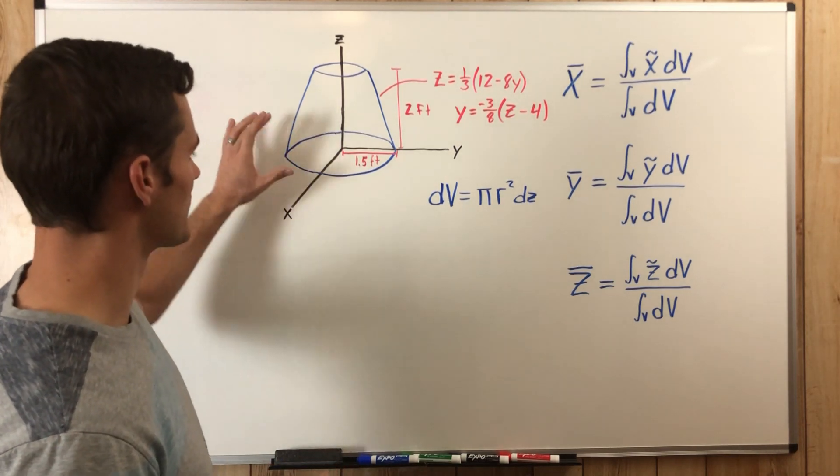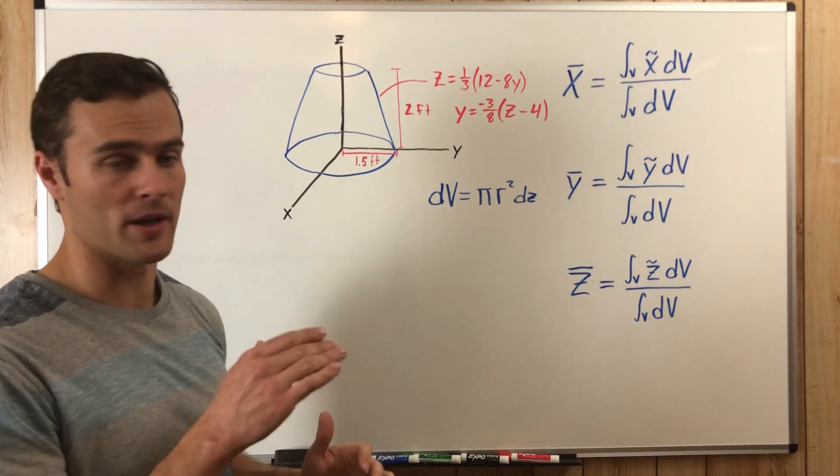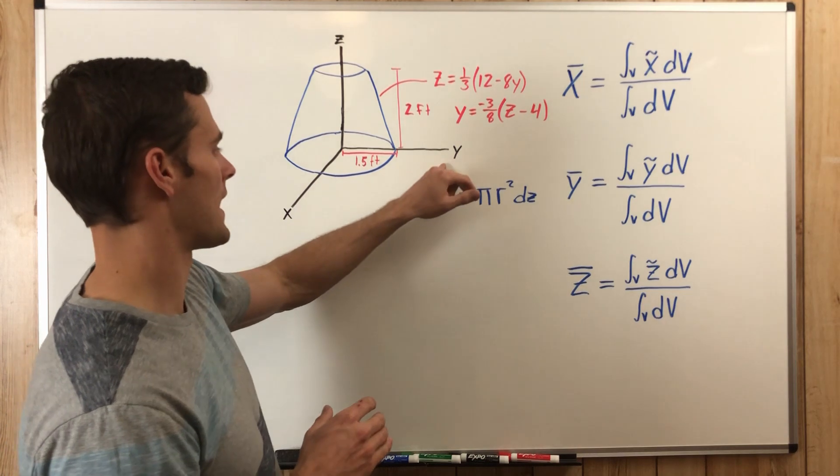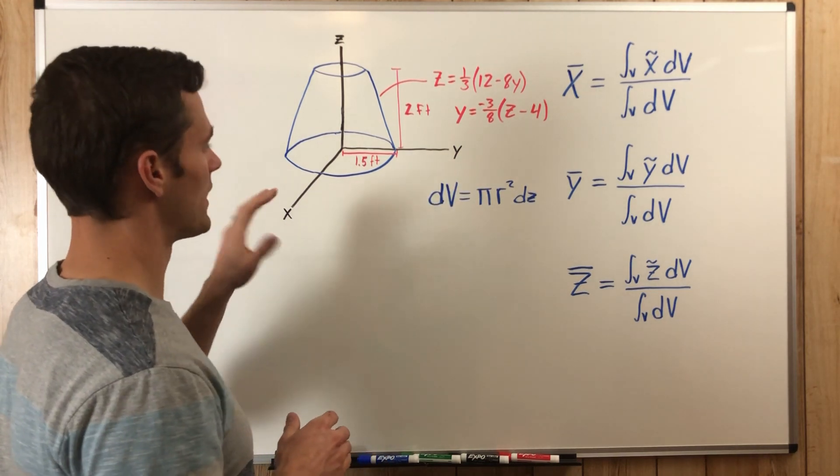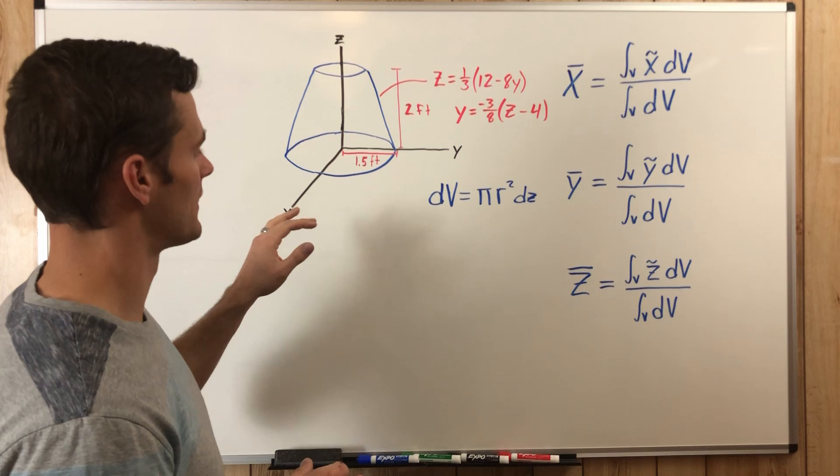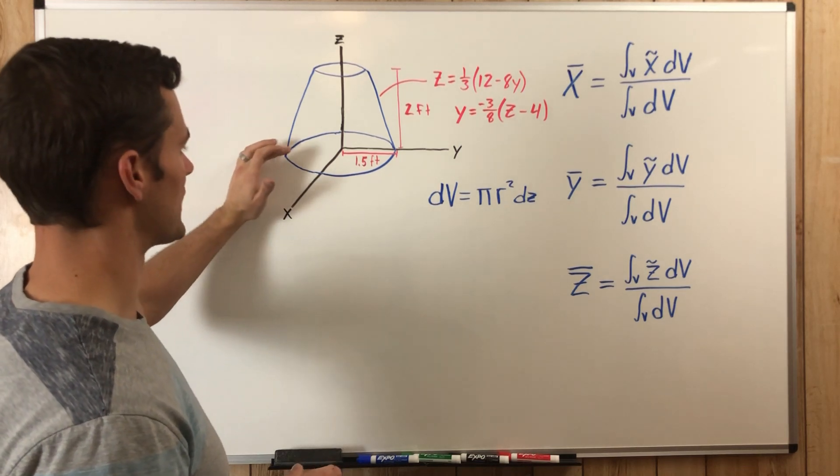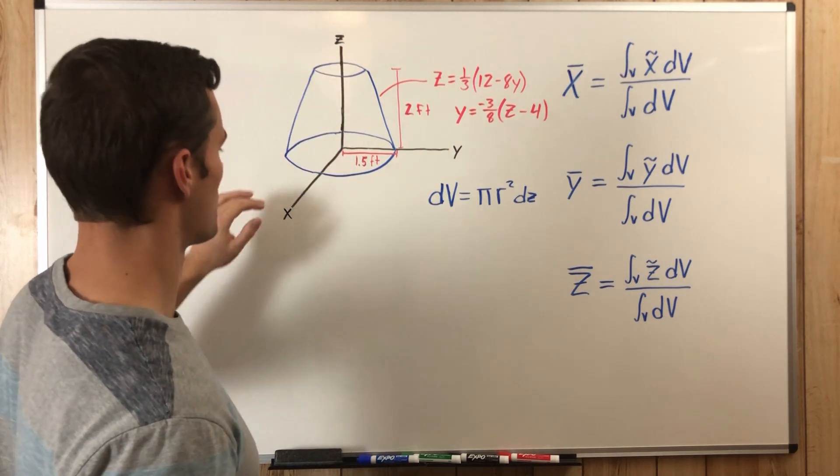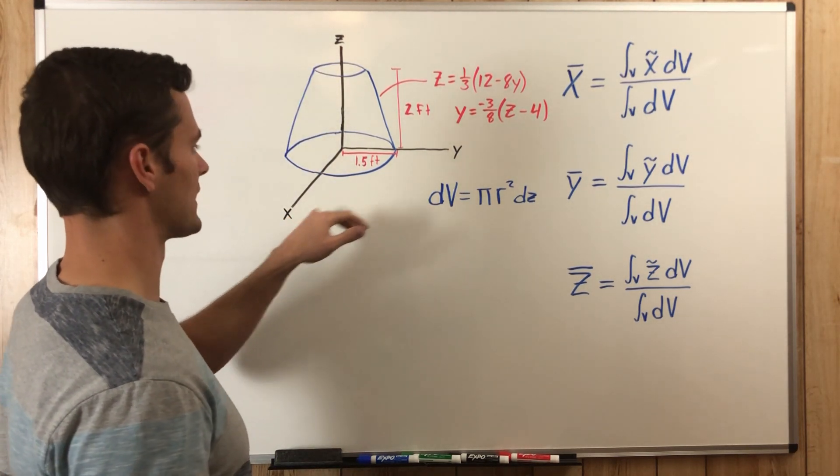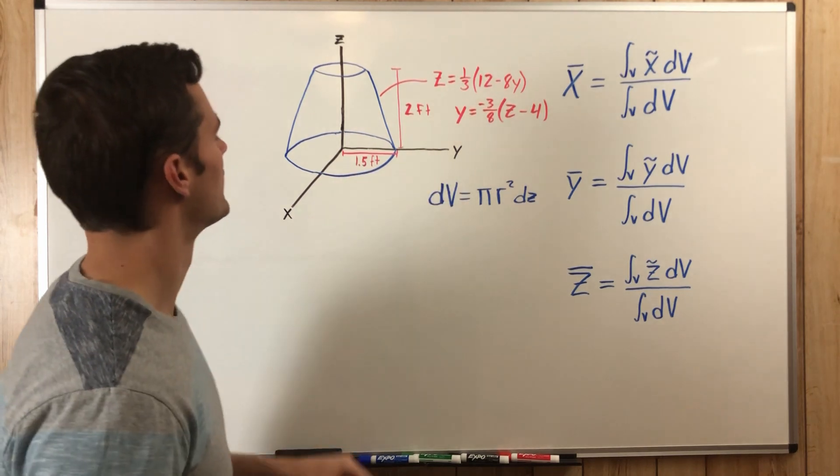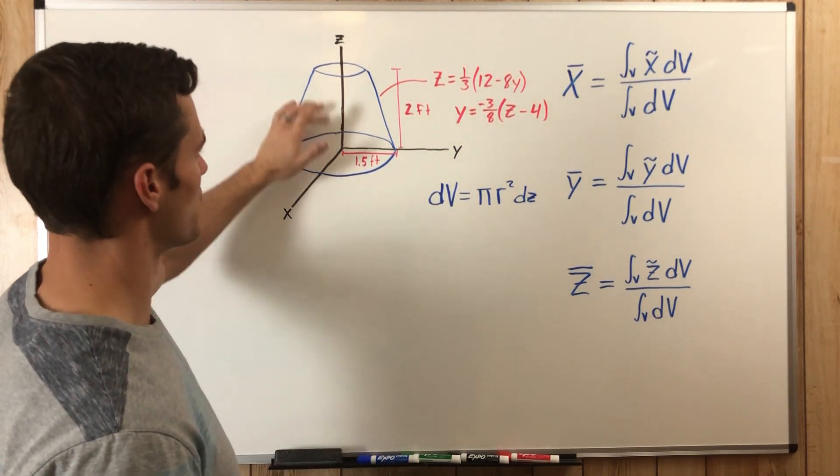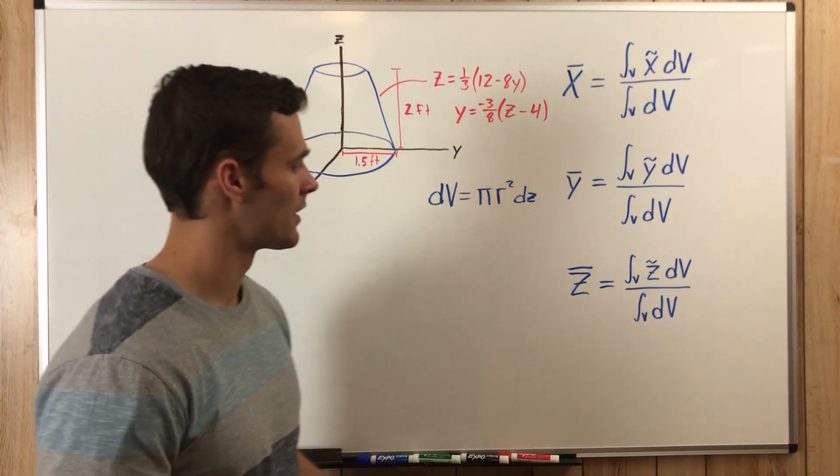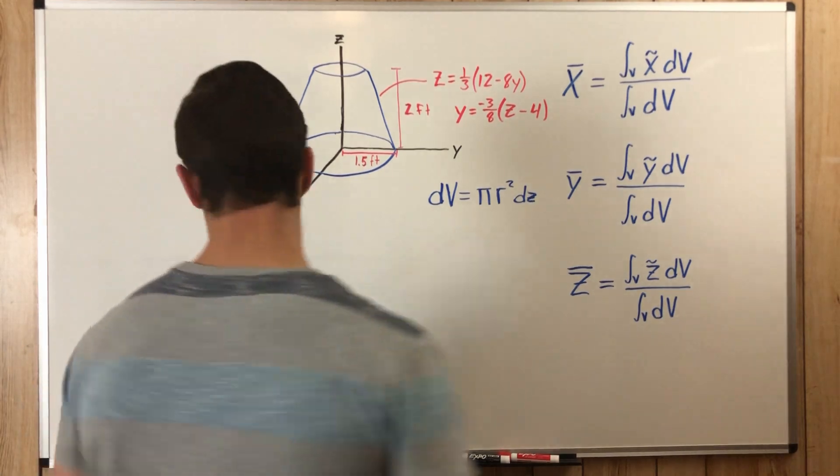So that being said, we only need to find Z̄ because this cone frustum, which is just a cone with the top cut off, is symmetrical about the X and Y axis. So we know because it's symmetrical about those axes that the centroid is going to lie somewhere along the Z axis, or in other words where the X and Y axis cross. And so because it lies somewhere along the Z axis, we only need to find Z̄.